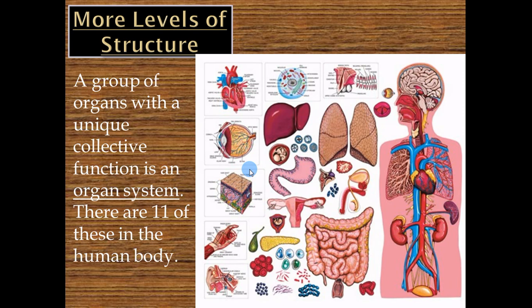When you take a bunch of organs and put them together for one purpose, they form an organ system. There are 11, possibly 12 if you count male and female reproductive systems separately. One organ can't work by itself — take the stomach: it needs the mouth to chew food, the esophagus to transport it, the small intestine to absorb nutrients, and the large intestine to reabsorb water. All those organs work together with one common goal: to digest and absorb food.